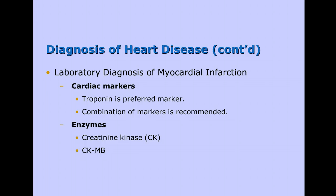Here are some of the myocardial infarction cardiac markers that we use on a very common basis in the medical laboratory. The first one is troponin — this is a preferred marker. We also recommend a combination of markers. Troponin is a protein that becomes elevated, but the enzyme of main importance is creatine kinase. We also do the isoenzyme of creatine kinase called CKMB, which would be elevated in a heart attack.